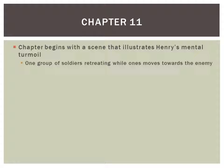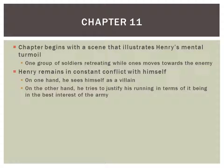In chapter 11, it begins with a scene that illustrates Henry's mental turmoil. One group of soldiers is retreating while one moves towards the enemy, reflecting the same internal conflict that Henry is dealing with — should he move towards and compete in the battle, or should he run away and save himself? Henry continues to remain in constant conflict with himself. On one hand, he sees himself as a villain. On the other hand, he tries to justify his running in terms of it being in the best interest of the army.